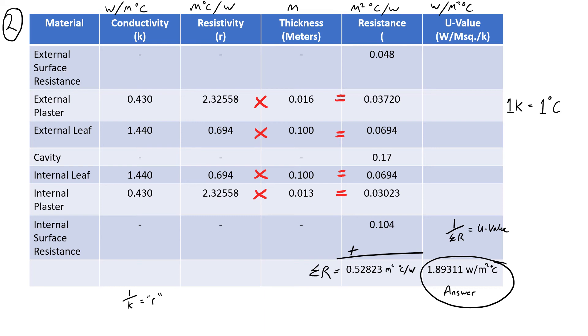Step 2 is to set up a table. The table never changes. Since this is a 1970s building with no insulation, chances are it's going to have a fairly high U-value, probably somewhere between 1.5 and 2 watts per metre squared degrees Celsius.